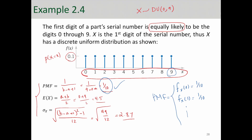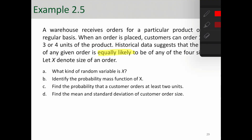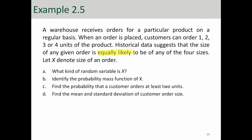Let's look at another example. A warehouse receives orders for a particular product on a regular basis. When an order is placed, customers can order 1, 2, 3, or 4 units of product. Historical data suggests that the size of any given order is equally likely to be any of the four sizes. Again, the key piece of information is 'equally likely,' meaning this random variable is most likely uniform. Let X denote the size of an order — X follows discrete uniform(1, 4).